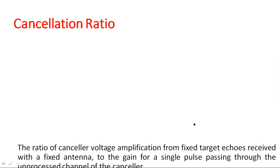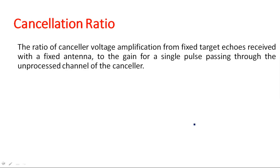The next parameter is cancellation ratio. Cancellation ratio is the ratio of the canceller voltage amplification from fixed target echoes received with a fixed antenna, to the gain for a single pulse passing through the unprocessed channel of the canceller. When we transmit a single pulse, what is the resulting echo signal we receive? That ratio — of the cancellation voltage amplification from the target echoes for a single pulse — is decided by the delay line canceller ratio.